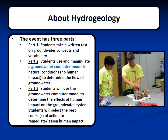Currently, the event takes place in three parts. In Part 1, students take a written test on groundwater concepts and vocabulary. In Part 2, students use and manipulate a groundwater computer model in natural conditions — meaning there is no human impact — in order to determine the flow of groundwater. In Part 3, students will use the groundwater computer model to determine the effects of human impact on the groundwater system. Students will also select the best course or courses of action to remediate and/or lessen human impact.